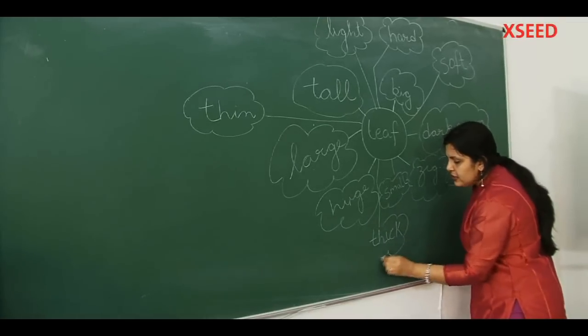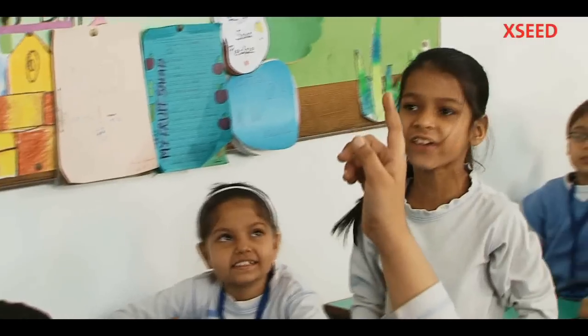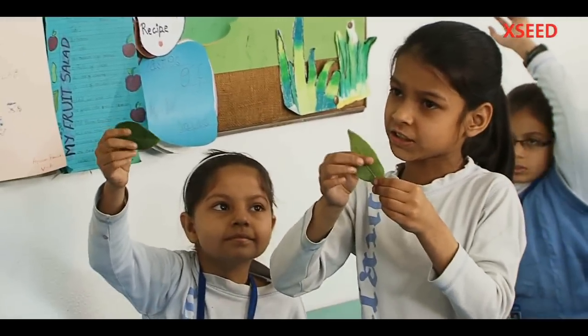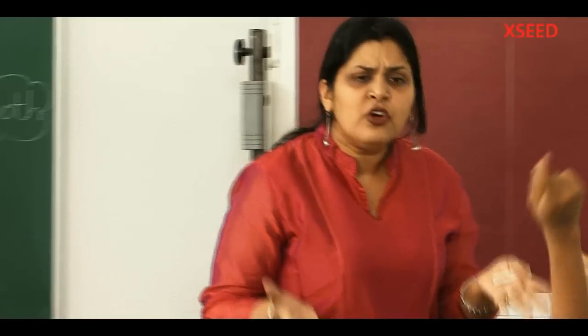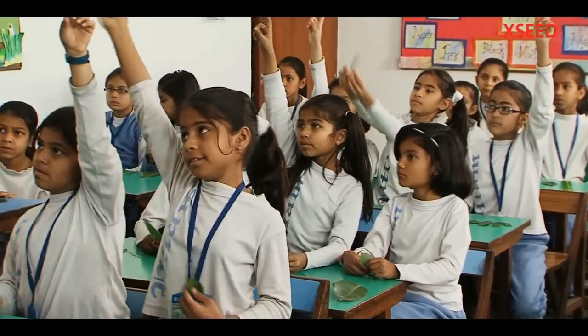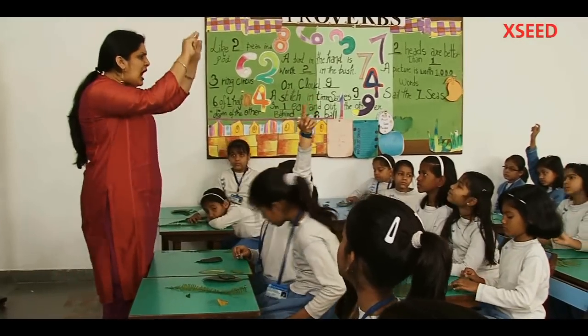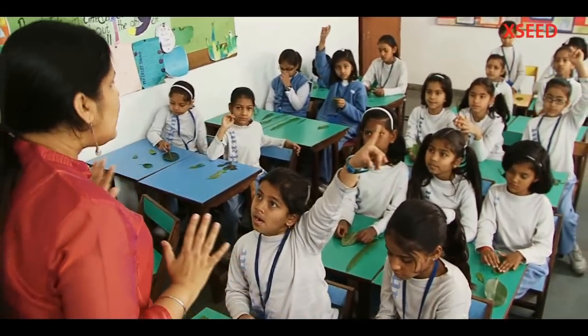Is there any other kind? Yes ma'am, they are very smooth. That's a nice word. Ma'am, it is dry. Why do you think it is dry? Is this leaf dry? No. Some parts of this leaf dry? Yes. Do you know what a margin is? Yes. Ma'am, it's the margin. So all of you know that the outer part of a leaf is called the margin. Is that clear?